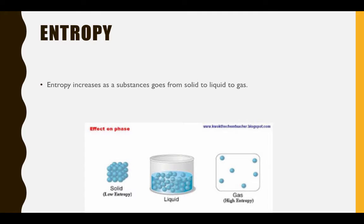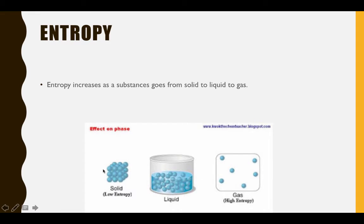Consider a simple example where we see entropy increasing. As a substance goes from solid to liquid to gas, we see an increase in entropy. The solid has very orderly particles. With the liquid, the particles are able to move about a bit more, making them slightly less ordered. In a gas, the particles are able to fly about all over the place, making them very disordered. There are tons of arrangements for the particles in a gas, while there are fewer for the liquid and even fewer for the solid.